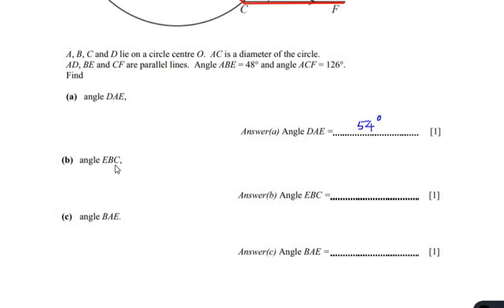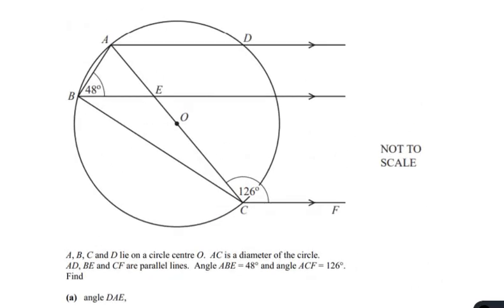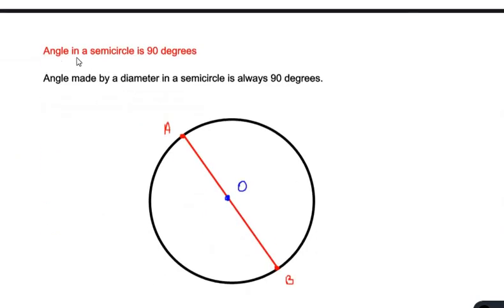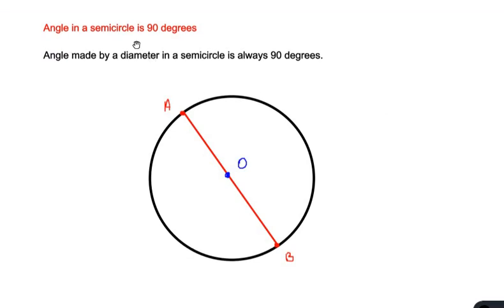Now let us look at the next part of the question: find angle EBC. That is the angle at E, B and C which we need to find out. To find this angle we are going to use a circle theorem which states that the angle in a semicircle is 90 degrees.